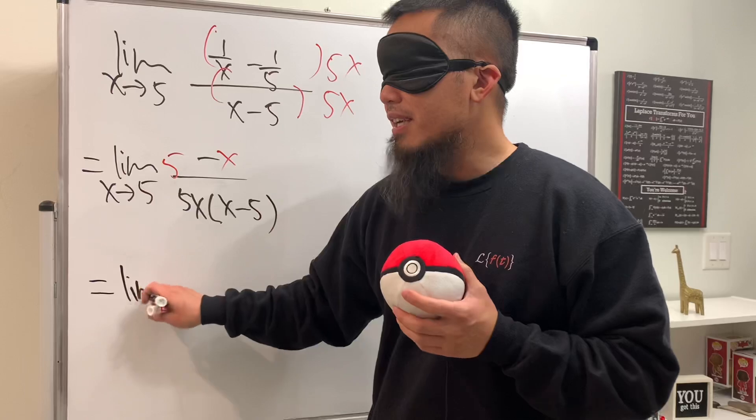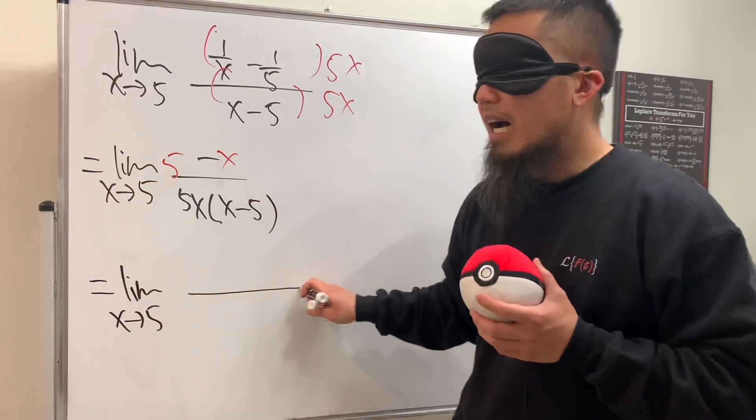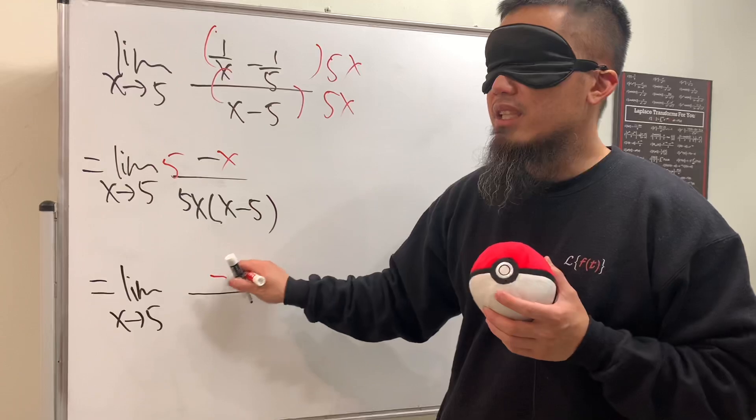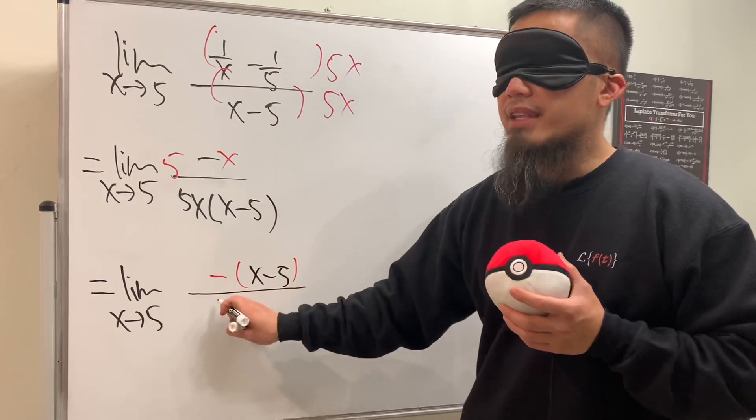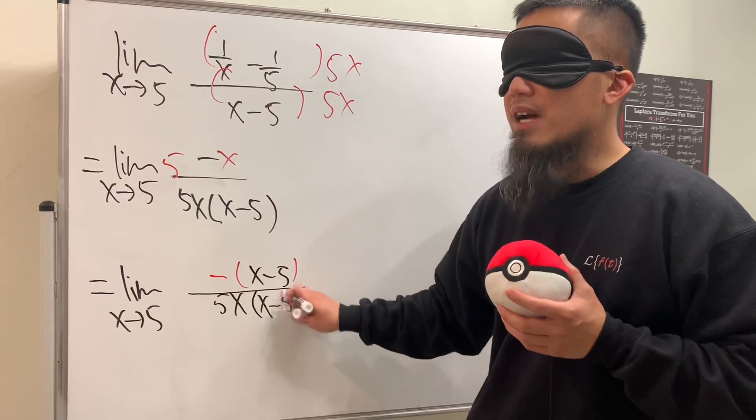...write this down again. The limit as x approaching 5, on the top technically you write down negative parentheses with (x - 5) inside, and at the bottom we have 5x times (x - 5).